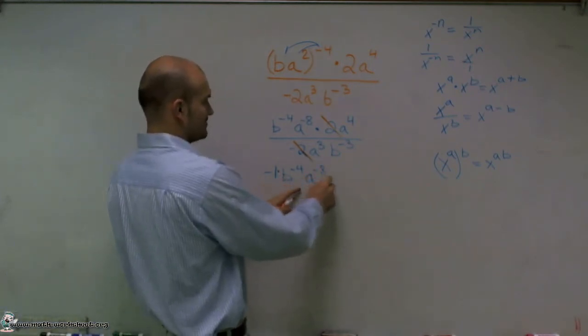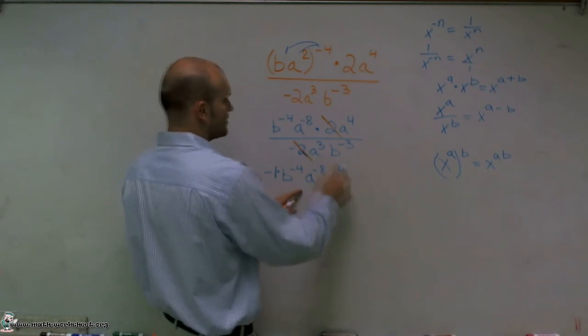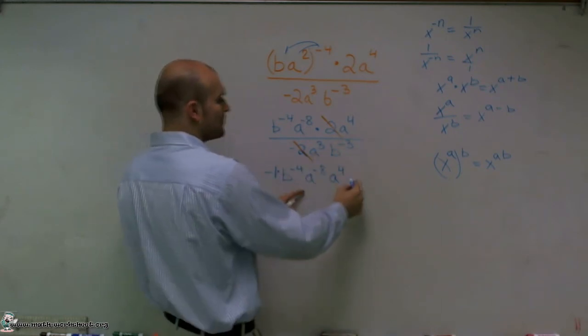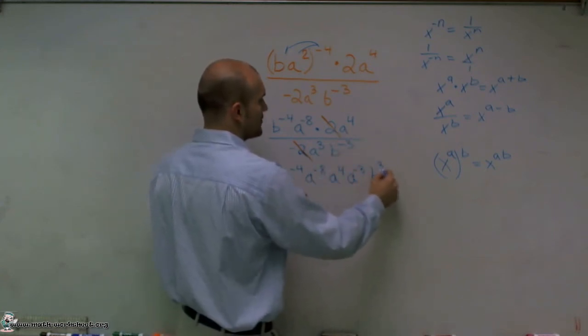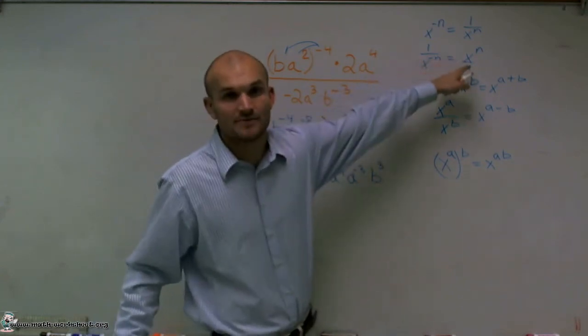A to the negative eighth, and then I have A to the fourth. Now, A to the third up top would be A to the negative third. B to the negative third up top would be B to the third. That's me using my negative exponent rule.